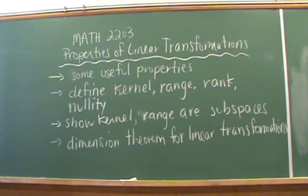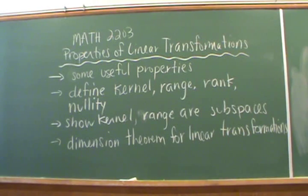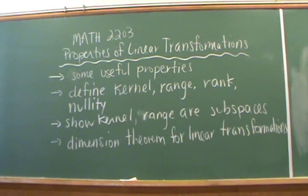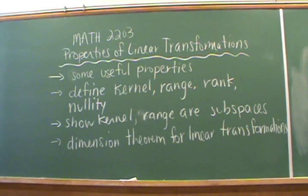In this Math 2203 video we're going to take a look at some properties of linear transformations. I'll introduce those properties as some theorems. Afterwards we're going to define the kernel and the range of a linear transformation and show that these are subspaces of our vector space. We'll also define the rank and nullity of a linear transformation, and finally we'll take a look at the dimension theorem as it relates to linear transformations.